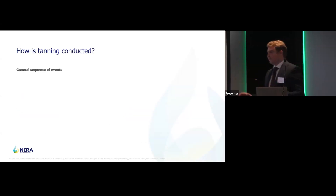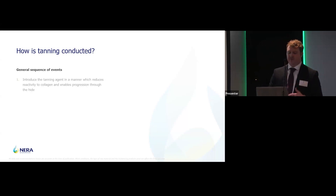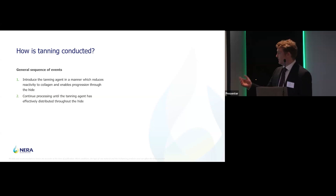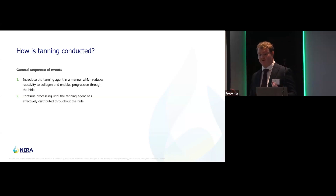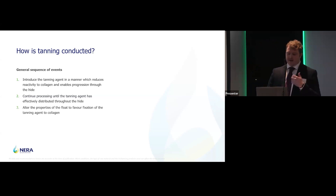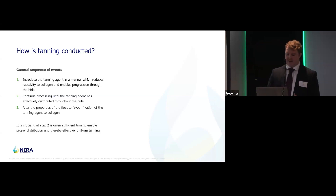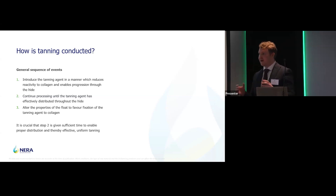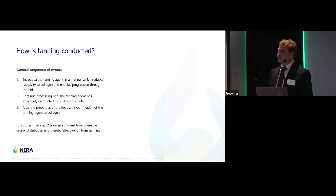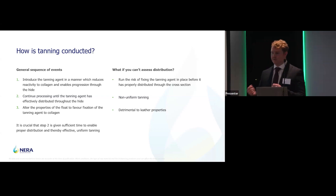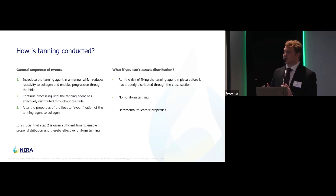Briefly on this — because I know a lot of you will know this already — what's the general sequence of events that we follow when we're tanning? First of all, you'll introduce your tanning agent at a point where it's not very reactive to the collagen, so you allow it to distribute. You give it a bit of time so that you fully distribute it throughout that cross-section of your hide. And then you alter the properties so that you increase the reactivity of the system and thereby fix it onto the collagen. You need to make sure you give that distribution step enough time so that you get a uniform tanning effect. If you don't, you fix your tanning agent in areas before it's fully had a chance to distribute through your cross-section, and that can have knock-on effects down the line.